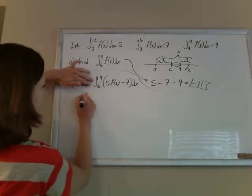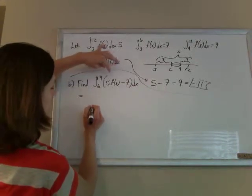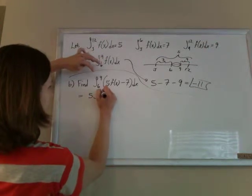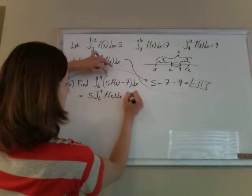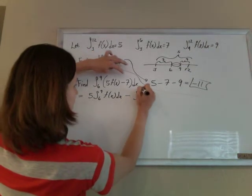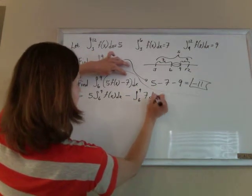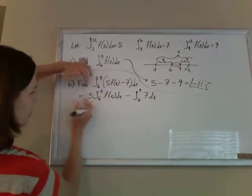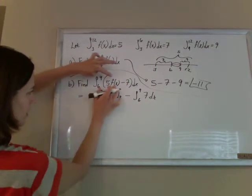So I'm going to break this up, split up the integral so that it's 5 times the integral of 6 to 9 of f(x), and then minus the integral of 6 to 9 of 7 dx. You can subtract the integrals, and I just pull the 5 out to the front because it's a constant.